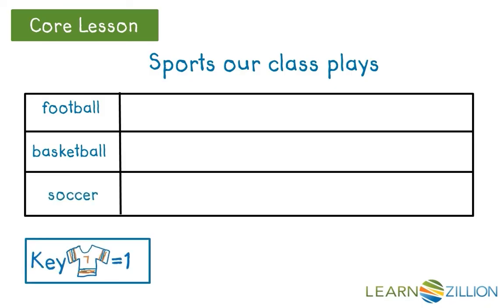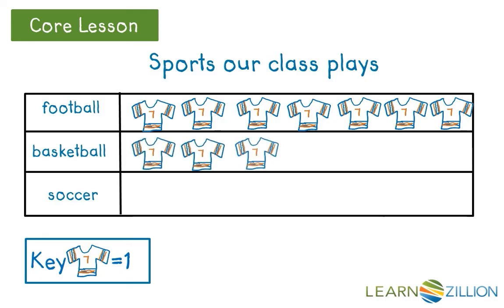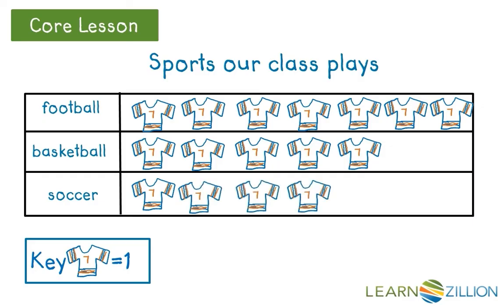Our key is important and it shows each jersey represents one player. And if we remember from our tally chart we have seven people that play football, five people that play basketball, and four people that played soccer. So our picture graph has the title, it has our labels or category headings, it has a key, and it has our information. I can tell by looking at this graph that football is the most popular sport played by people in our class. It has the most votes.